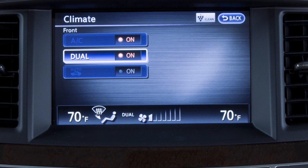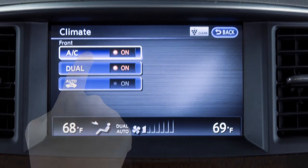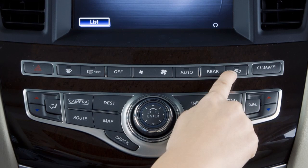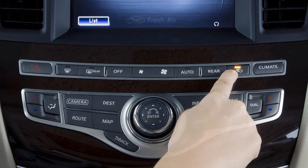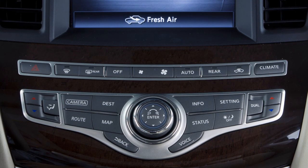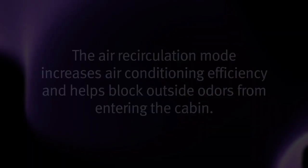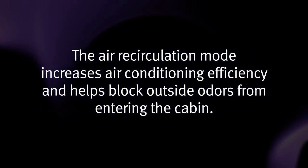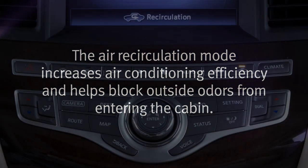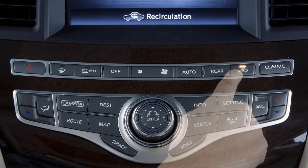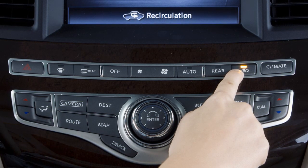To manually turn the air conditioning on or off, press the climate button and then touch the AC key on the screen. Intake air control is automatically regulated in auto mode. Press the intake air control button to manually alternate between recirculating inside air and drawing outside air into the cabin. The indicator light on the button will illuminate when the recirculating mode is active. The air recirculating mode increases air conditioning efficiency and helps block outside odors from entering the cabin. To return to automatic control of the air intake mode, press and hold the air intake control button for approximately two seconds until the indicator light flashes twice.